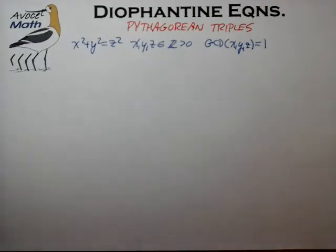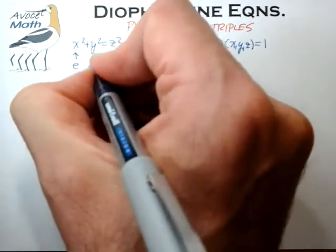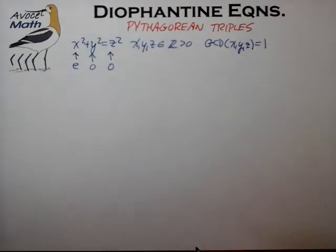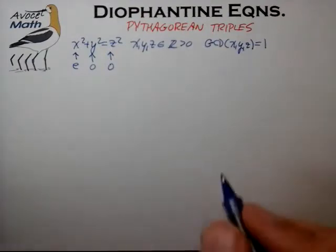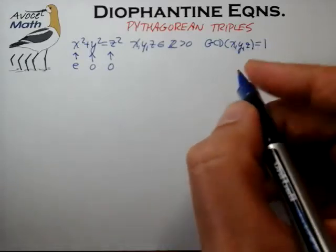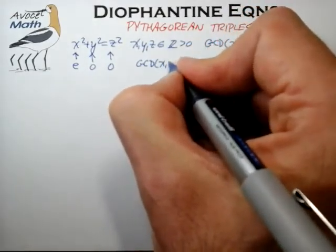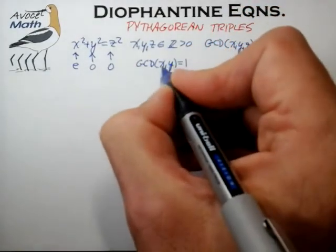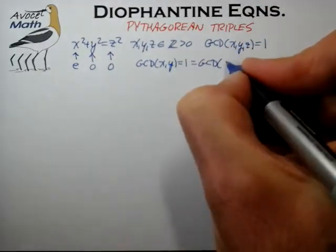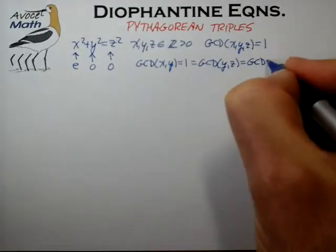From our discussion last time, we found we could limit our search to the case where x is an even number, y is an odd number, and z is an odd number. Additionally, we can conclude that while x, y, and z do not share a common factor, it's also true that no variable pairs share common factors — so the greatest common divisor of x and y is 1, as is the pair y and z, and the pair x and z.